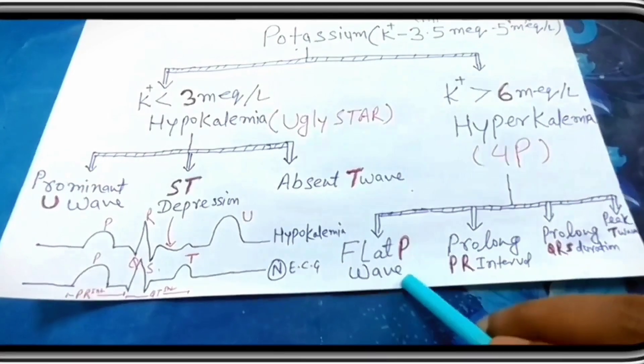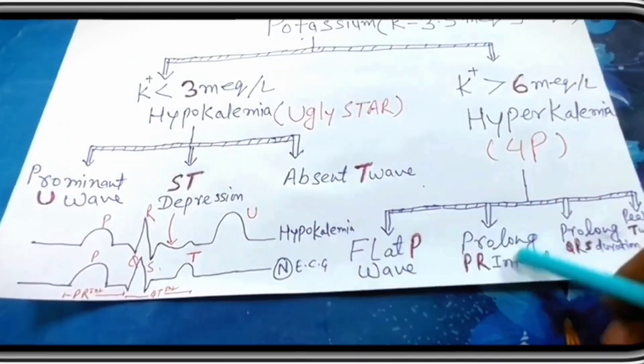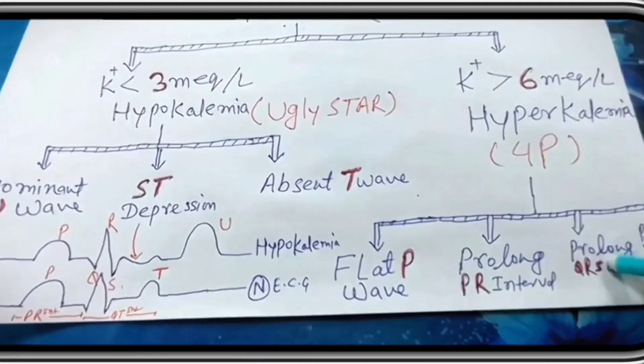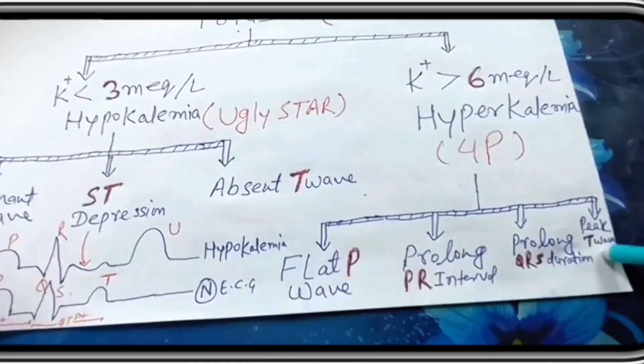First is flat P wave. Second is prolonged PR interval. Third is prolonged QRS duration. And fourth is peak T wave.